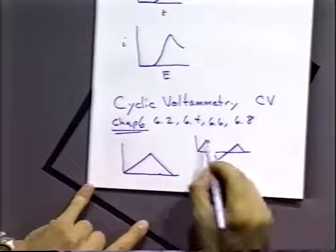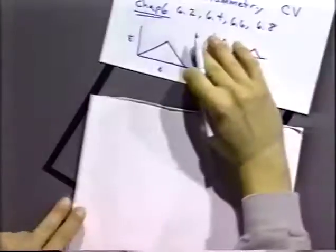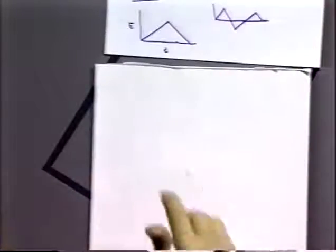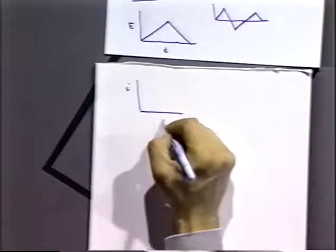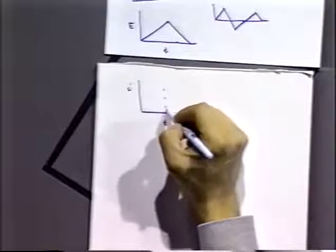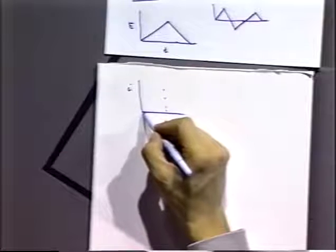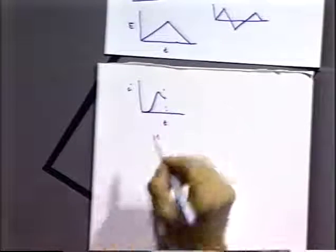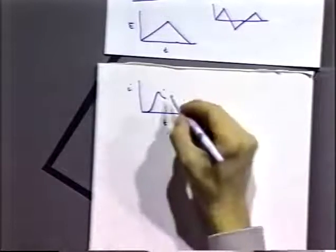When we do a potential sweep like this, this is the current versus time. We observe a current versus time shape. For the first part of that curve, it's just the same as a linear sweep - we'd see the same exact curve as before. But on the reverse, we can see a different shape. What's happening now?